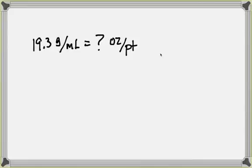Let's take the question: 19.3 grams per milliliter equals how many ounces per pint? The first thing we're going to do is write 19.3 grams over one milliliter, because if we have a fractional unit like that, the denominator is going to have a one associated with it, just like in algebra you would have a one on the bottom.